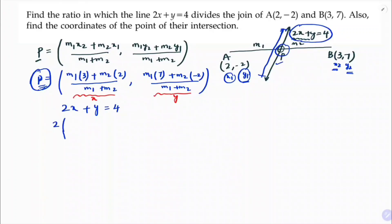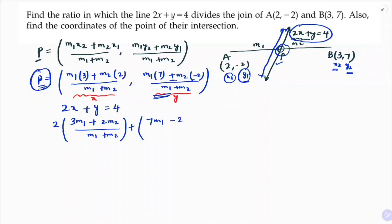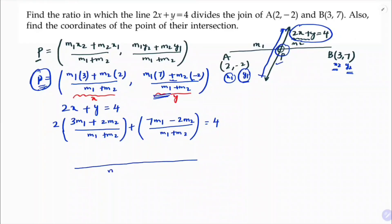Substituting: 2 times x, which is (3m1 + 2m2) / (m1 + m2), plus y, which is (7m1 - 2m2) / (m1 + m2), equals 4. The LCM of the two terms is (m1 + m2).